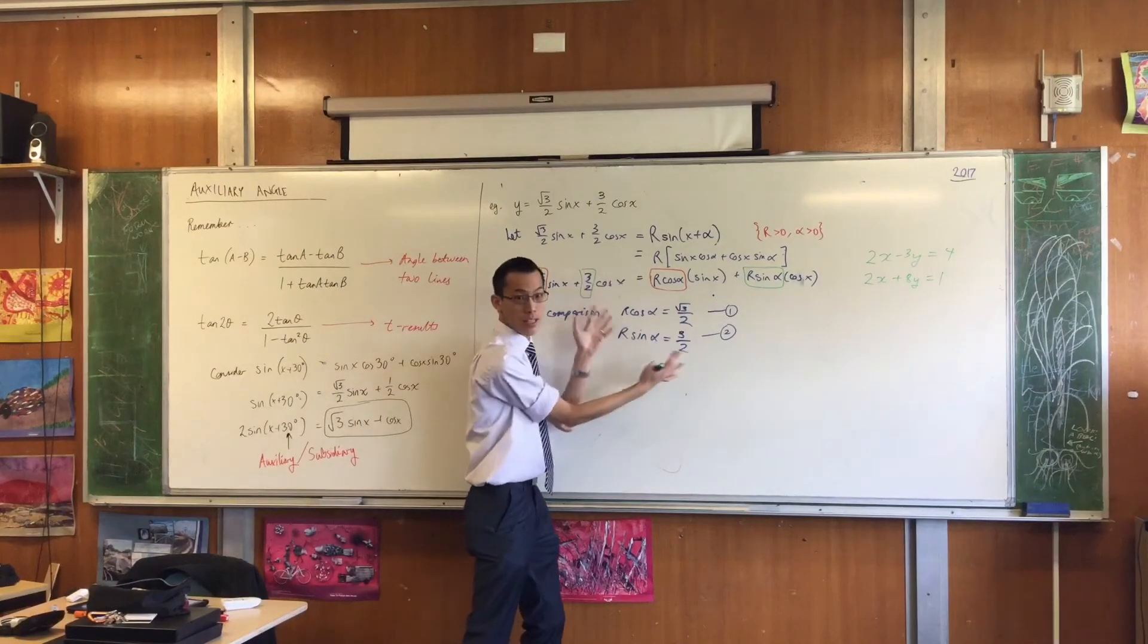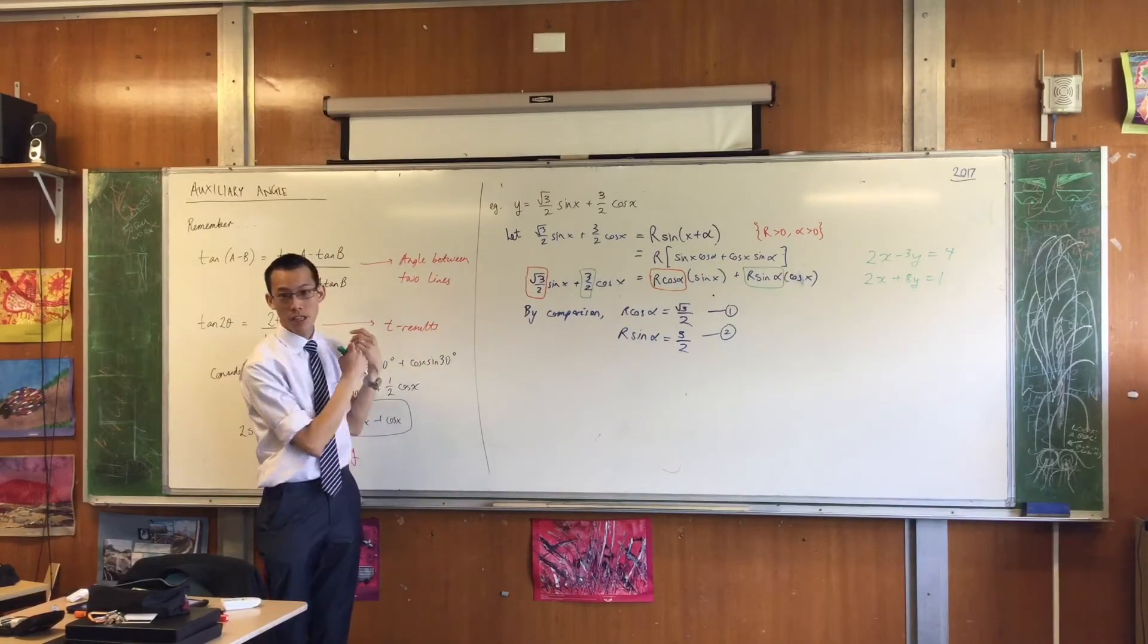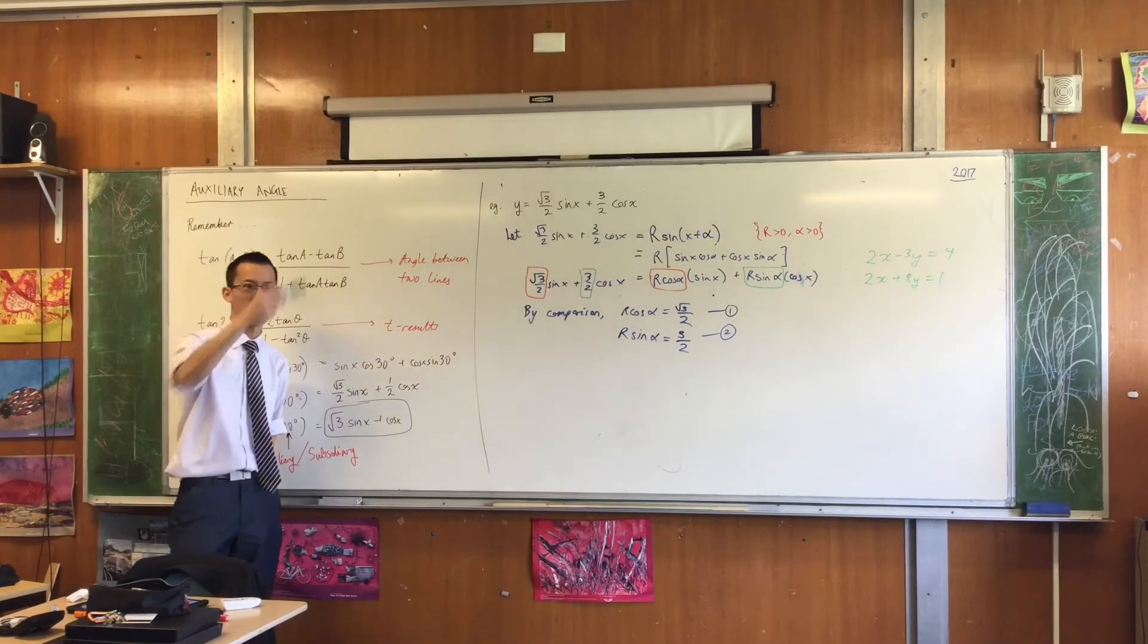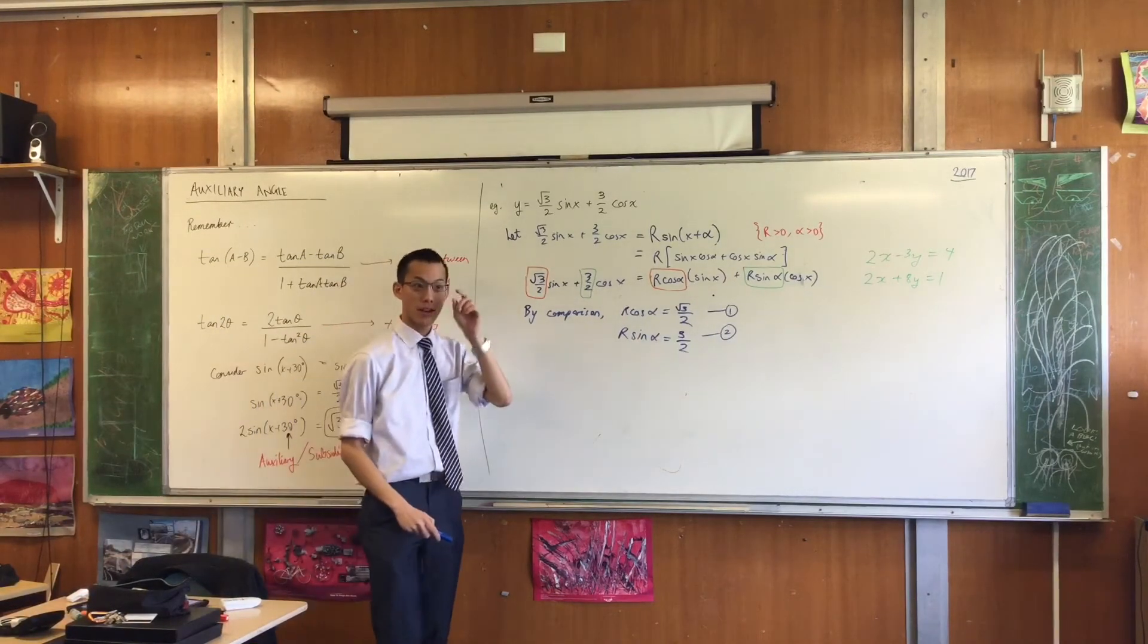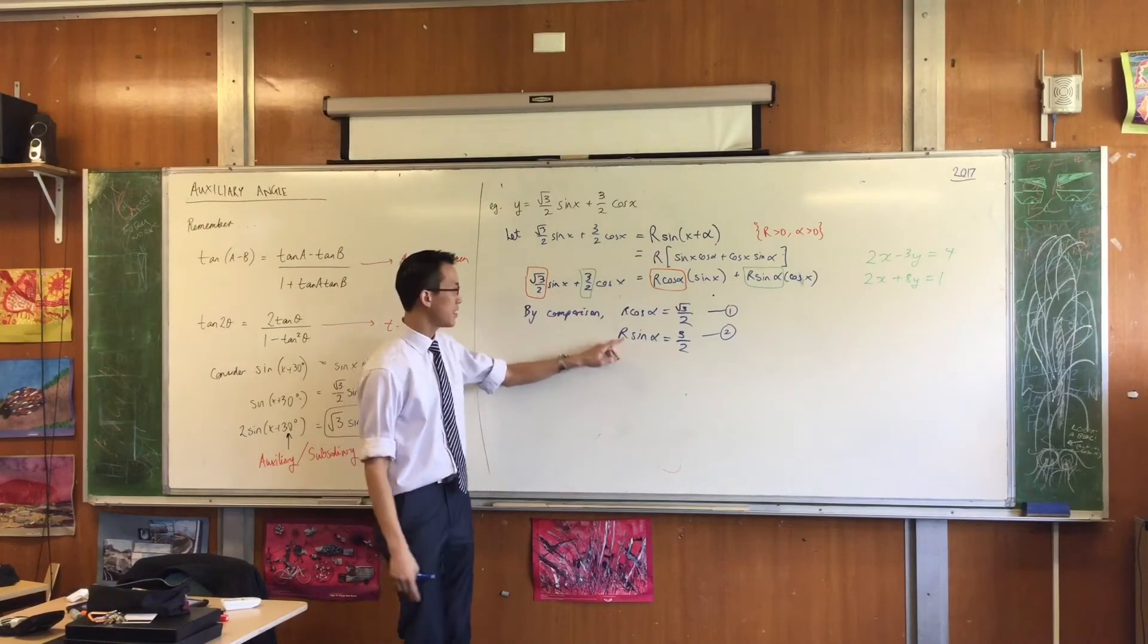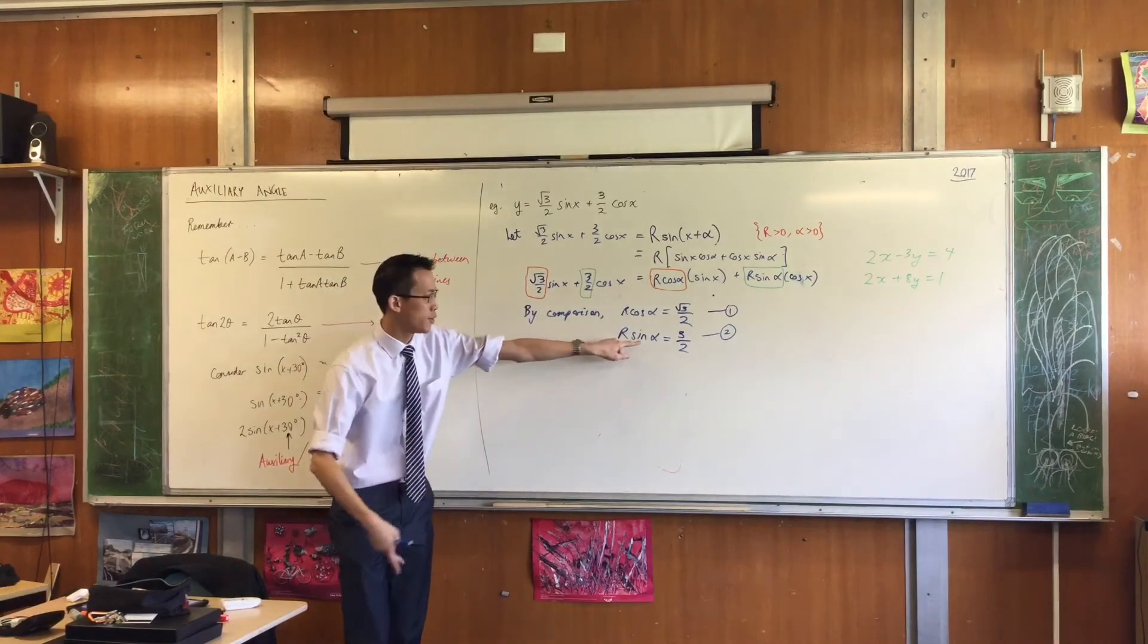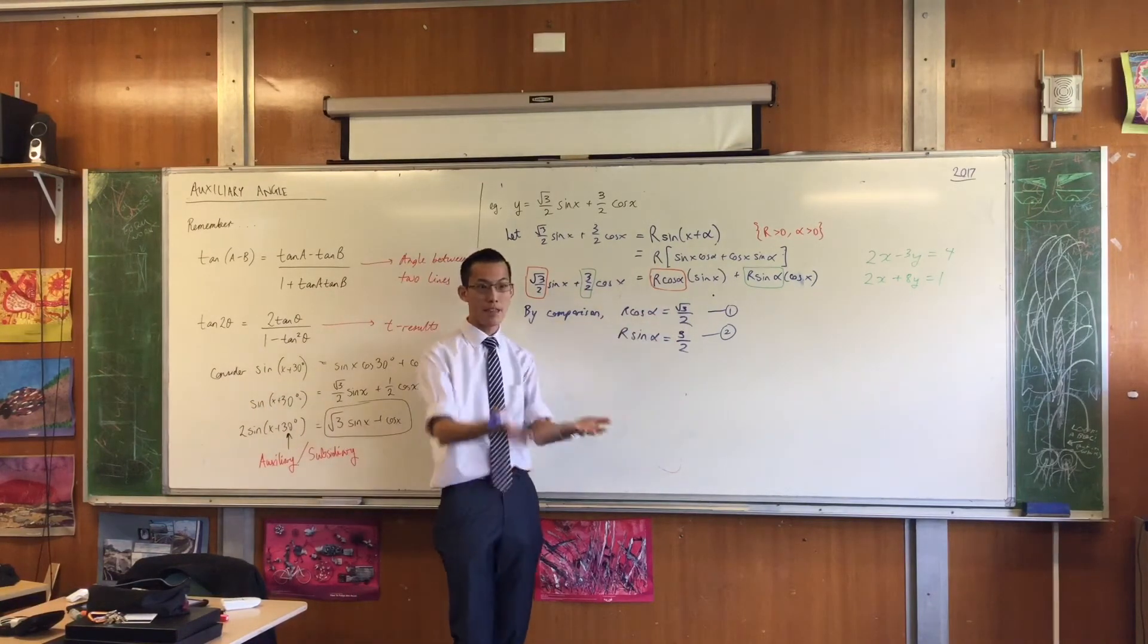So somehow you've got to do something with these guys to put them together to either get rid of the R's or get rid of the alphas. How do we do it? Would anyone like to suggest something we could do? You could divide equation two by equation one and get like tan alpha. Now, just pause for a second. I think the most obvious thing to do is say if I've got an R here and an R here, if I divide one by the other, the R's will cancel. And as Eric says, if you do this divided by this, you just have tan α equals some number and then off you go.